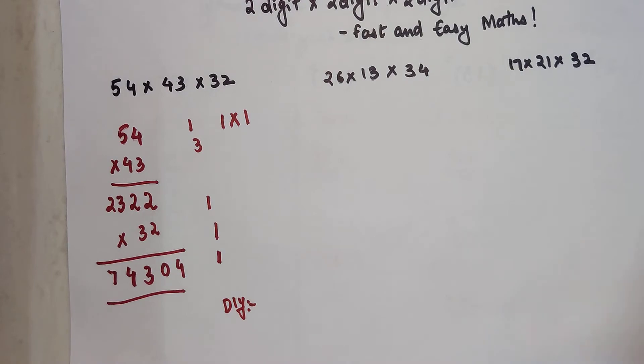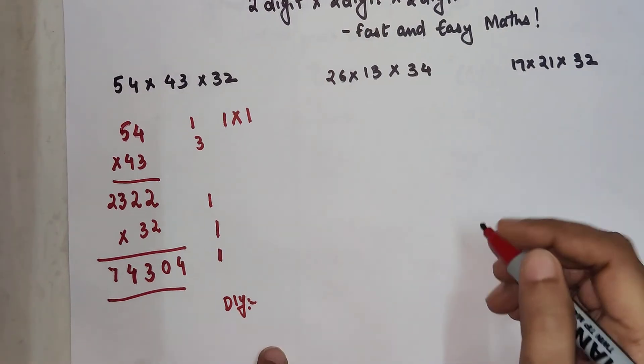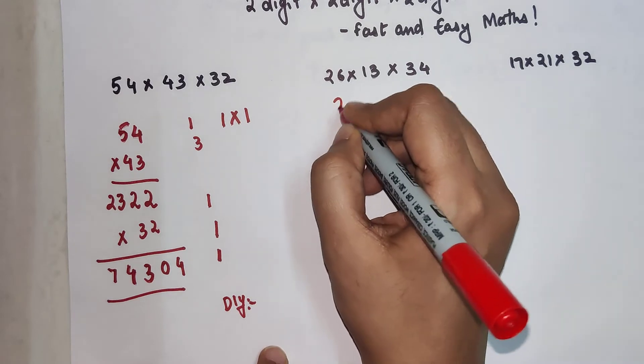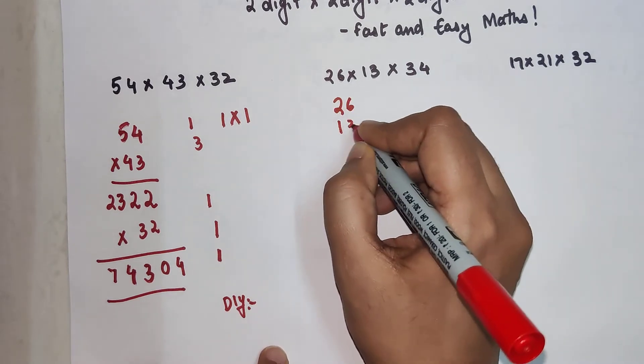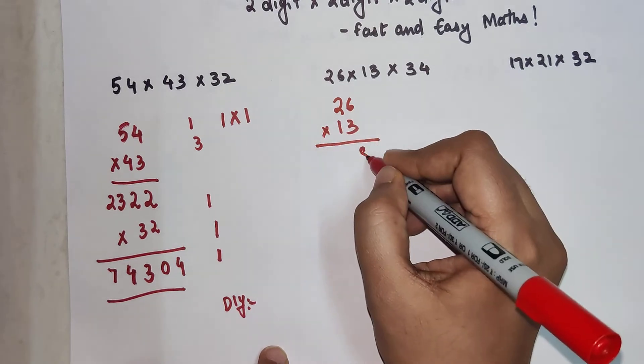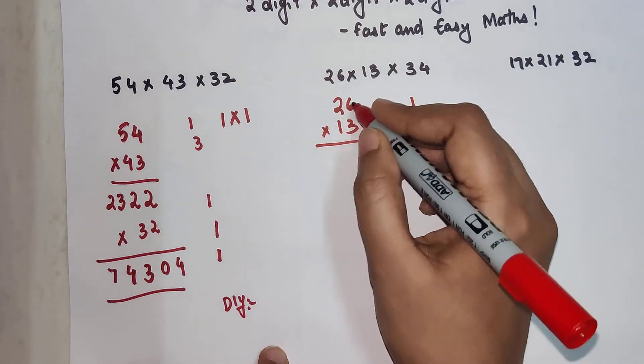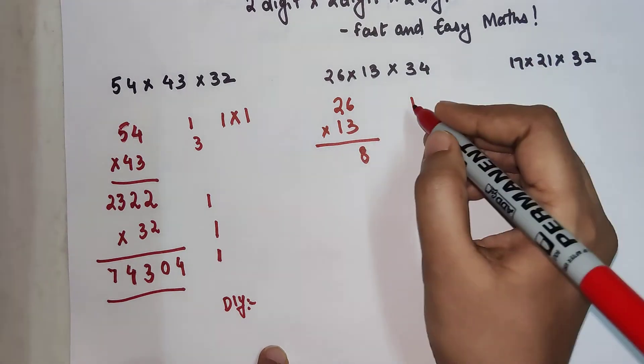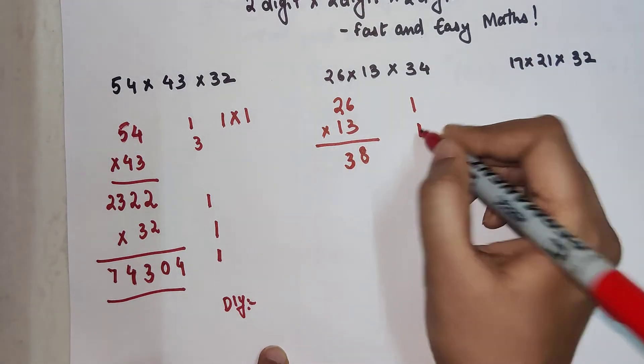So for this one now we have 26 into 13. I should have taken this one first. This is easier. So we have 6 into 3 which is 18, 1 carry. 2 into 3 which is 6, 6 into 1 is 6. So 6 plus 6 is 12 plus 1 is 13, 1 carry.